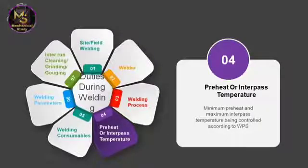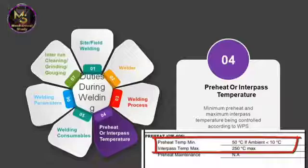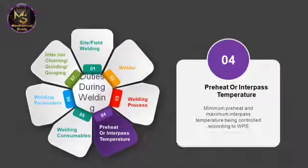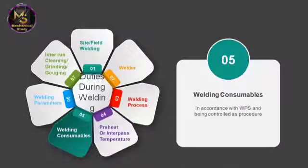Minimum preheat temperature and maximum interpass temperature should be according to the WPS. You can see this example image showing preheat and interpass temperature ranges. These ranges should be maintained during welding. Temperature shall be checked using temperature-indicating crayons, thermocouples, pyrometers, or other suitable means to ensure the temperature specified in the WPS is obtained prior to and maintained during welding.